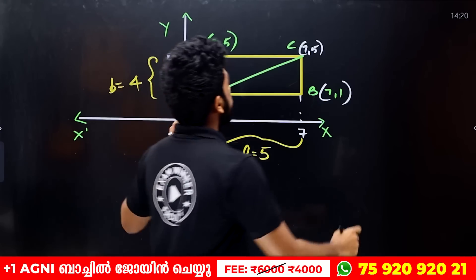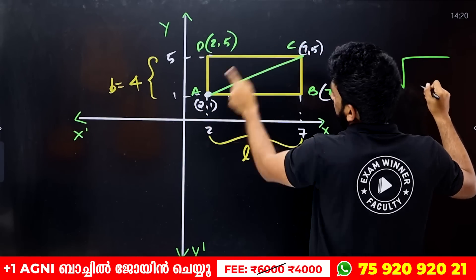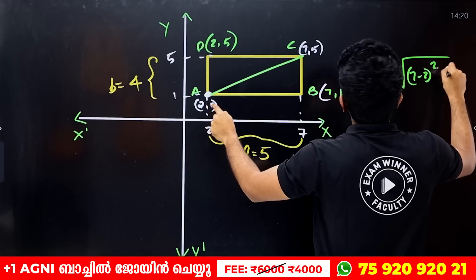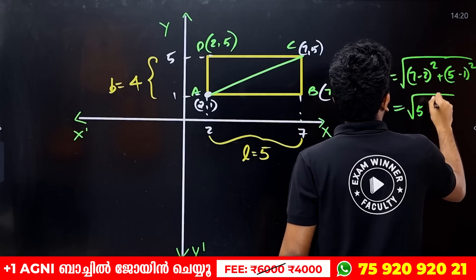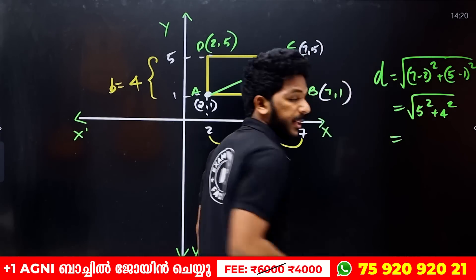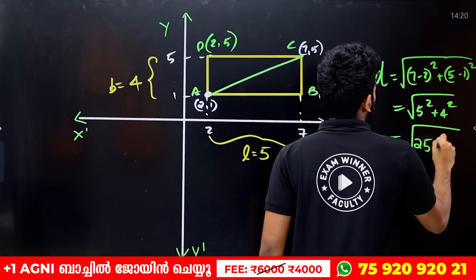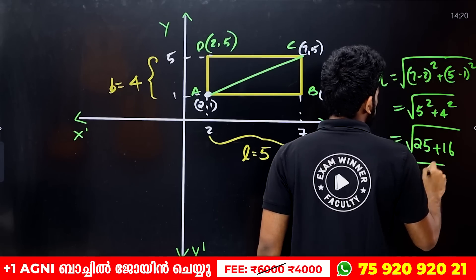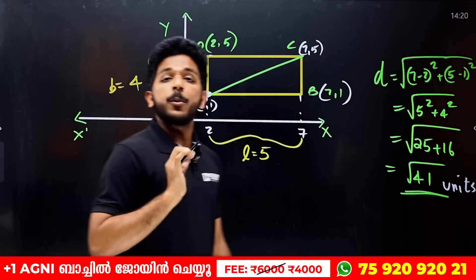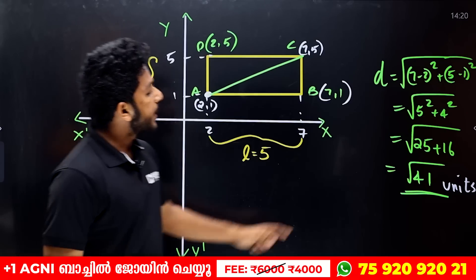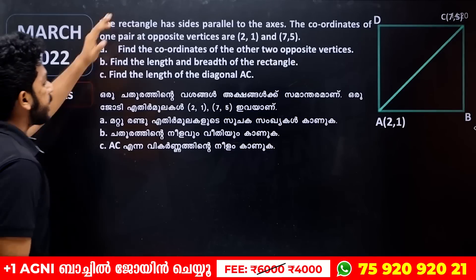Using the distance formula: AC = √((7−2)² + (5−1)²) = √(5² + 4²) = √(25 + 16) = √41. So the diagonal length is √41 units.